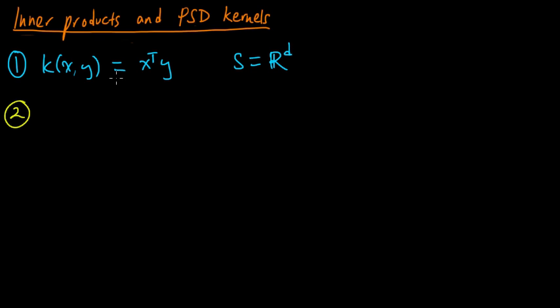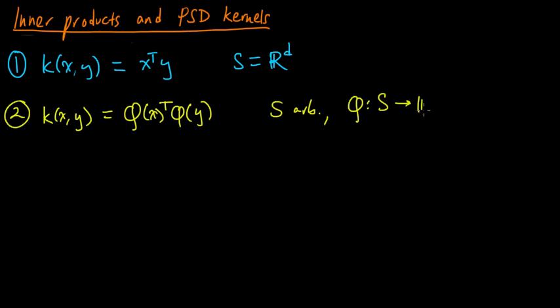But first, let's look at a couple ways to generalize this. So, one way would be to, instead of just taking the dot product of x with y immediately, we could first take some map phi of x, and take the dot product of phi of x with phi of y. So here, s would just be some arbitrary set, s arbitrary, and phi would just be some arbitrary function from s to Rd for any Rd. And this is just the dot product on Rd. And the same proof that we will give for this number one to show that it's a positive semi-definite kernel or covariance function just generalizes immediately to this case.